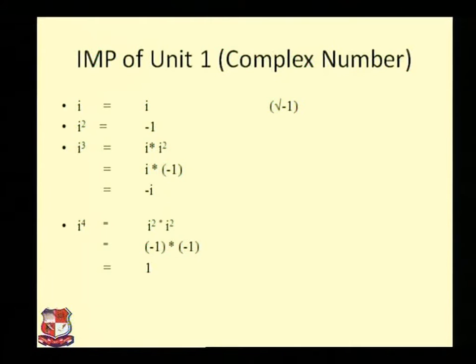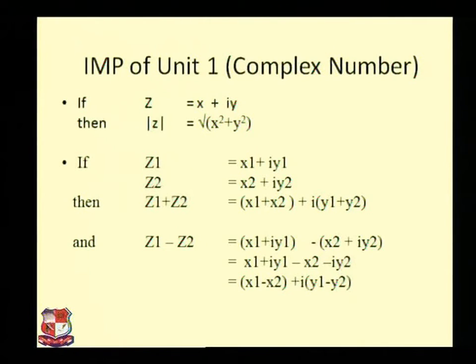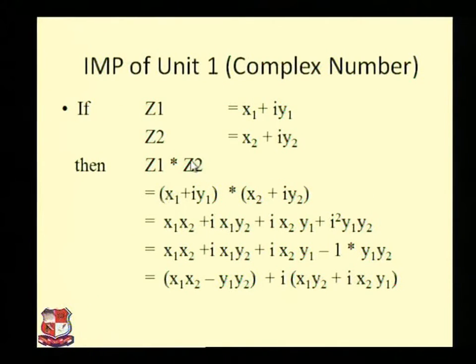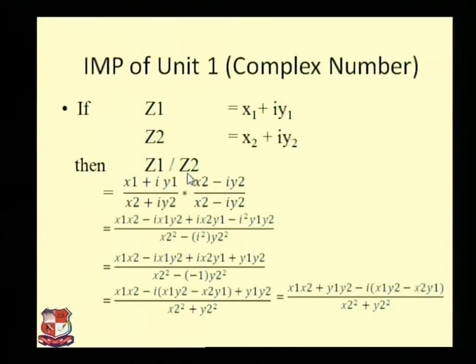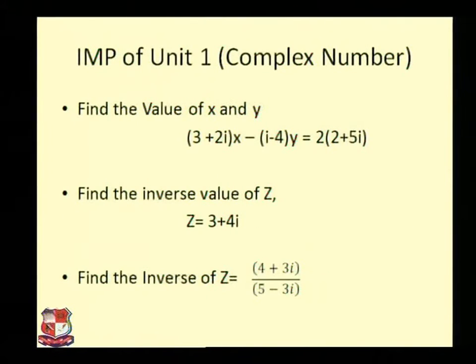Up to now we have discussed the simple basic formula: i² = -1, i³ = -i, i⁴ = 1. We also discussed the procedure for addition (z1 + z2), subtraction (z1 - z2), multiplication, and division of two complex numbers, along with some important problems. We also discussed how to find the modulus |z| = √(a² + b²).